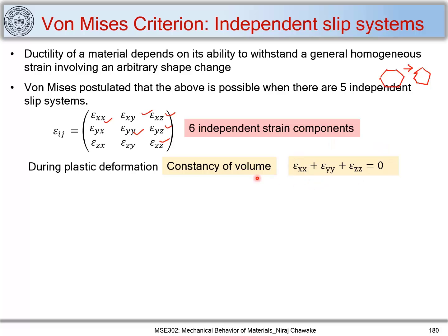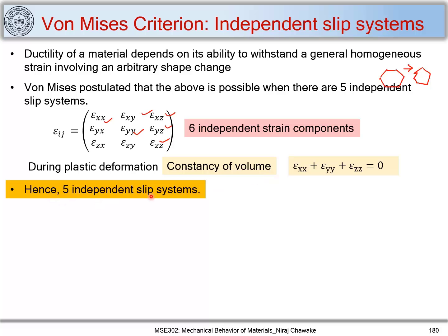This condition must be satisfied when there is constancy of volume. Out of the six independent strain components, if I know ε_xx and ε_yy, I can find ε_zz. So out of these three normal strain components, only two are independent and one is dependent. Therefore, the six independent strain components are reduced to five independent strain components when we consider plastic deformation with constant volume, and thus we need five independent slip systems.